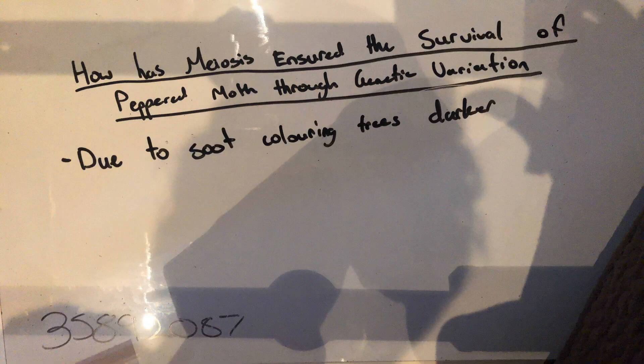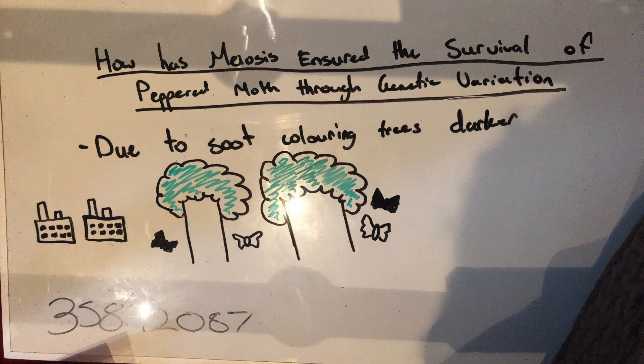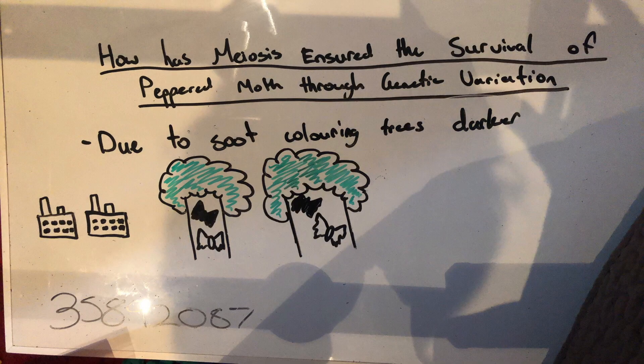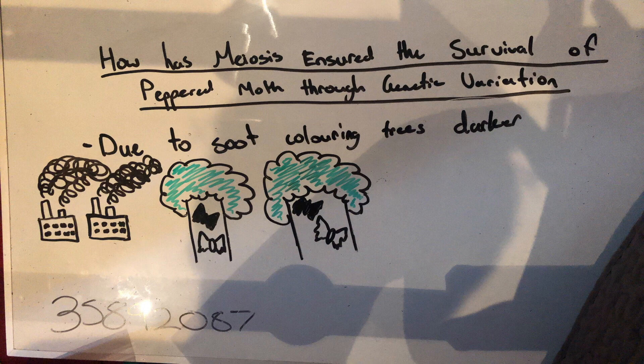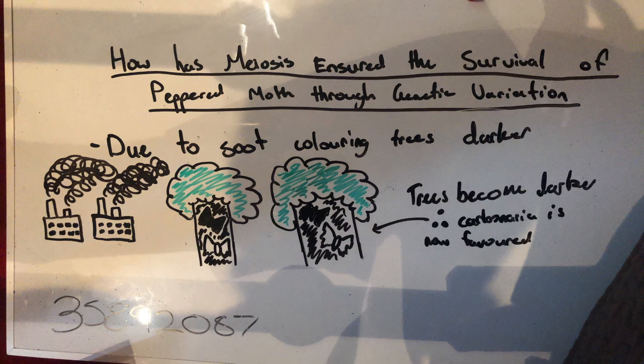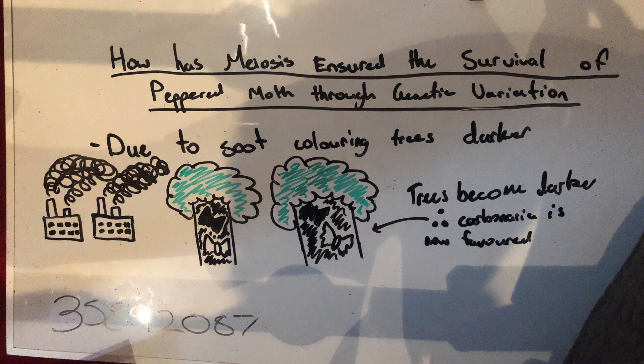The crossing over and the exchange of sections of non-sister chromatids within prophase 1 has allowed for the carbonaria phenotype to be passed on between peppered moths. The genetic variation was needed within these moths as the industrial revolution took place, darkening the color of the trees through soot landing on them, making it easier for predators to see moths with the typicalis phenotype, and therefore eat them.